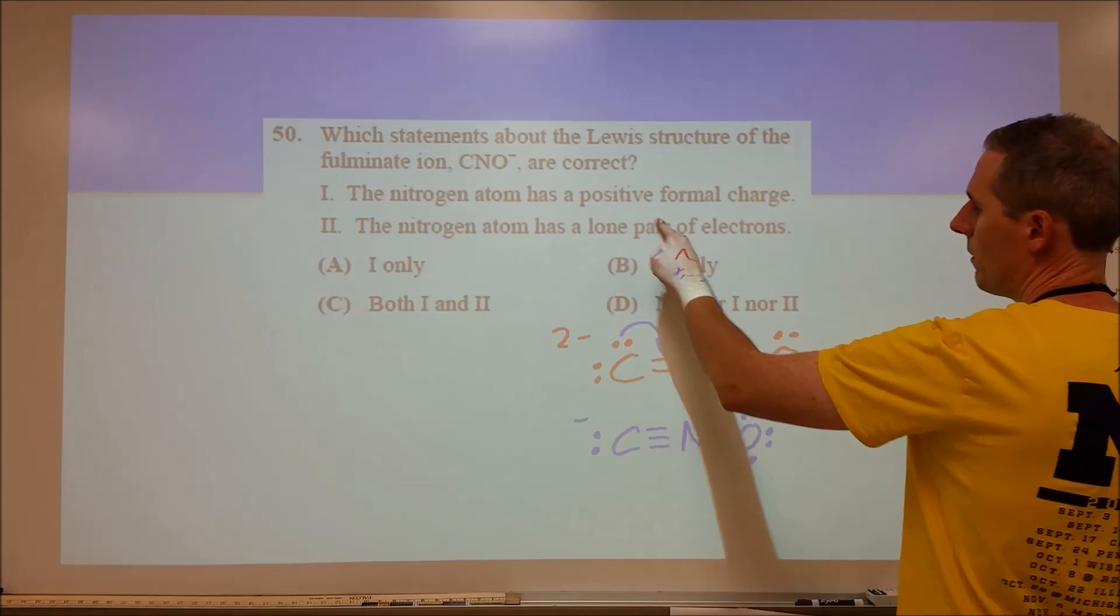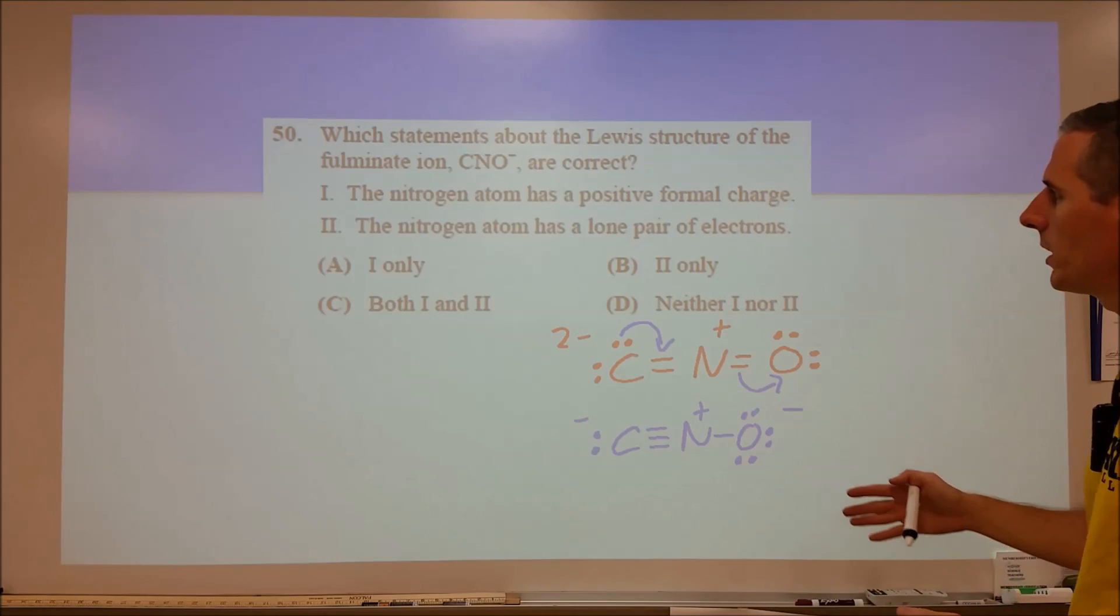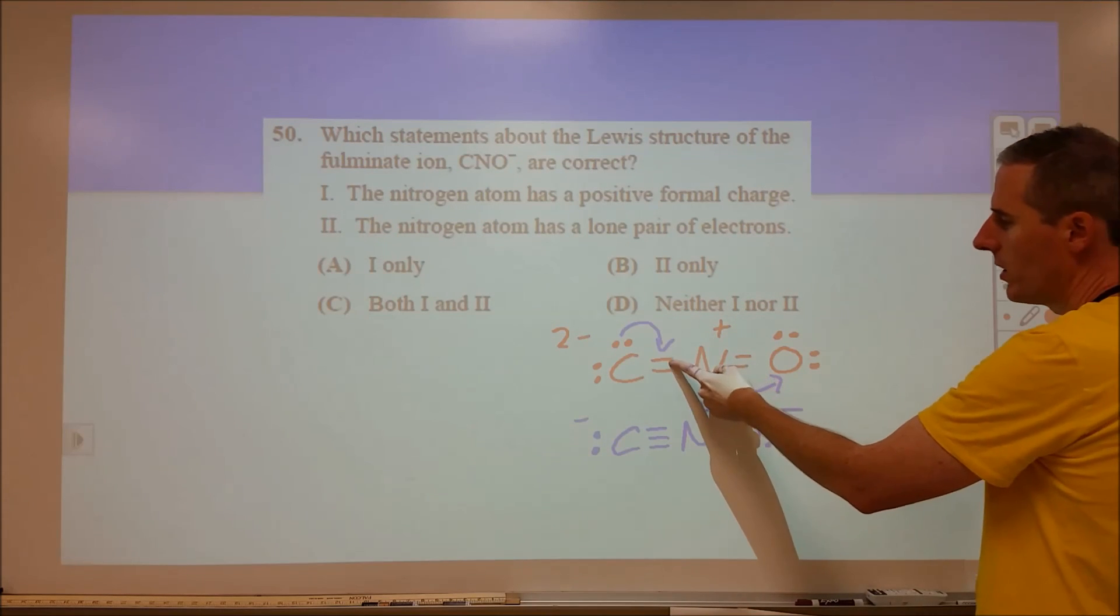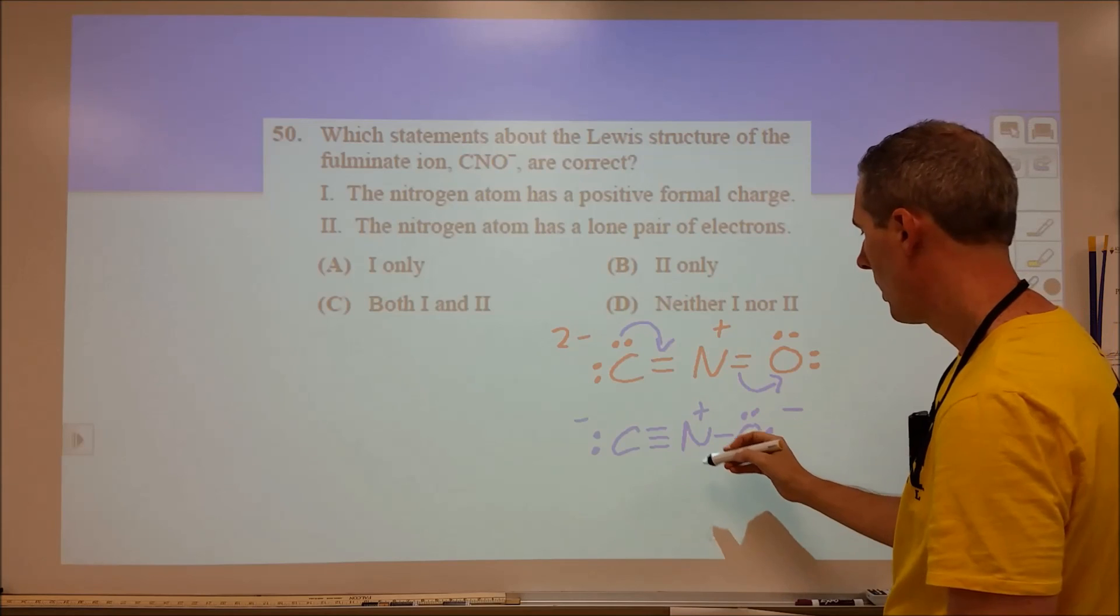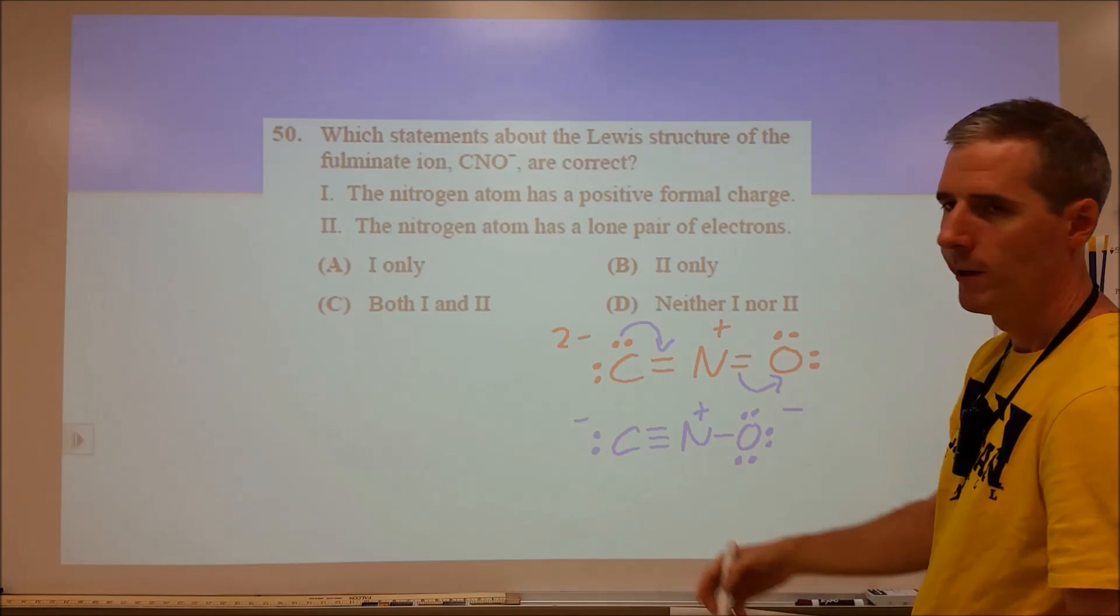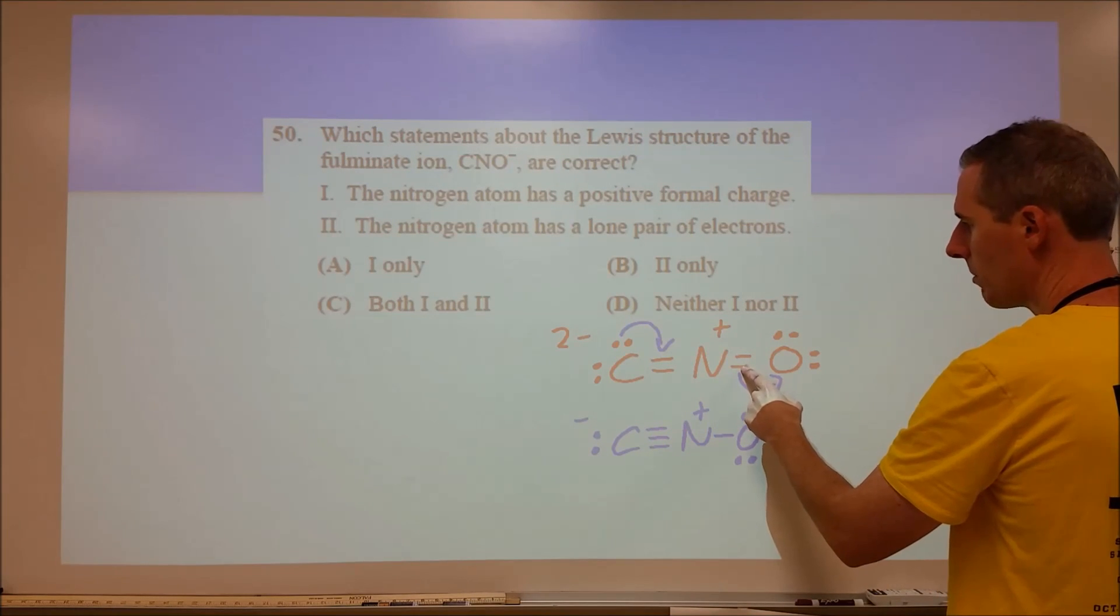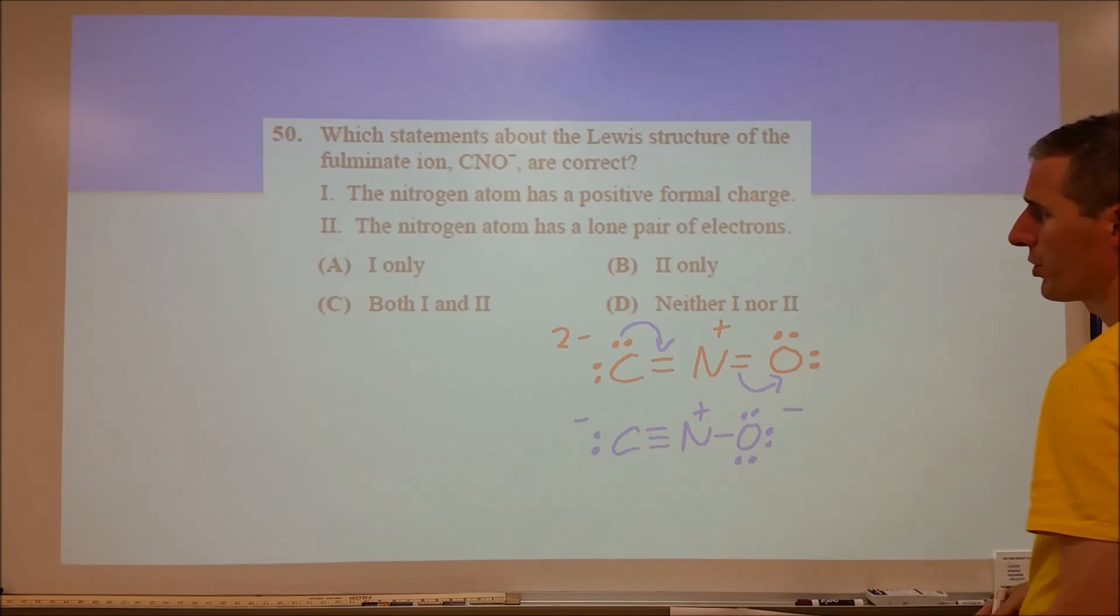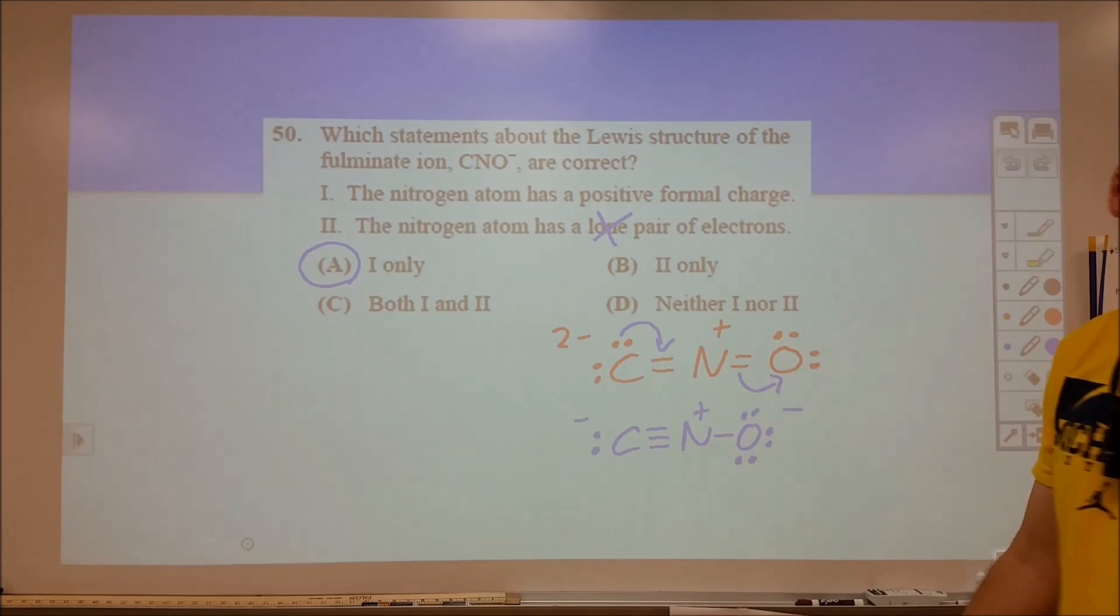Let's look at our choices. Nitrogen has a positive formal charge. We have that for both that we've drawn so far. Nitrogen has a lone pair of electrons. Really, at this point, we're tending to pick one but not two. We would pick A as our choice. But let's look, is there a way for us to put an electron pair on the nitrogen that makes sense? We could pull the electrons from here and put them on here, and that would give us three bonds and a lone pair. But that would leave us short of the octet with the carbon. Carbon typically does not violate the octet in that manner. So that's probably not going to be the case. It looks like our best choice is to have nitrogen with the positive formal charge and not have this. So we would go with A, number one only.